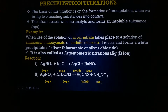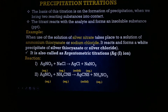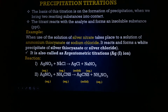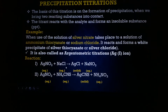Let us see one example. When we use a solution of silver nitrate reacting with other solutions like ammonium thiocyanate and sodium chloride, it reacts and forms a white curdy precipitate — silver thiocyanate with ammonium thiocyanate, and silver chloride with sodium chloride. When silver is used as the titrant, these titrations are also called argentimetry titrations, as silver ion has the Latin name Argentum.